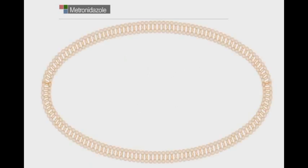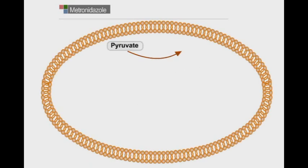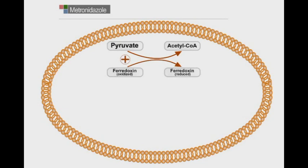The story starts with the cleavage of bacterial or protozoal pyruvate molecules into acetyl CoA molecules. This process is assisted by the oxidized ferredoxin molecule, which is converted to reduced ferredoxin molecule.